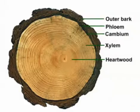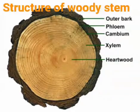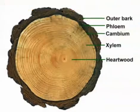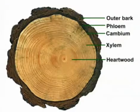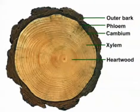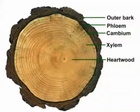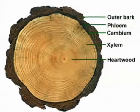Outer bark is dead phloem. When phloem dies, it sheds outwards in the form of bark. Bark protects the tree from extremes of temperature, diseases, and insects.